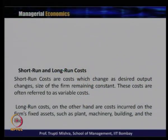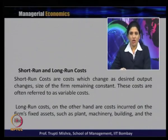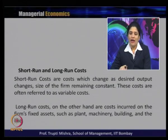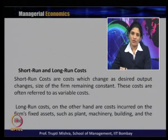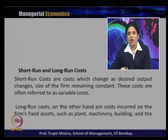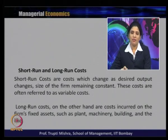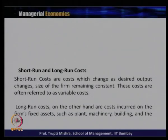Short run and long run cost: short run costs are costs that change as desired output changes, with the size of the firm remaining constant. These costs are often referred to as variable costs. Long run costs on the other hand are costs incurred on the firm's fixed assets such as plant, machinery, building and the like. So whatever cost changes with respect to the operational part is the variable cost, and this is considered the short run cost.